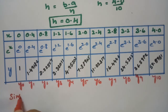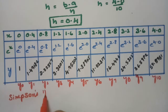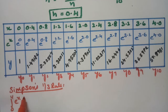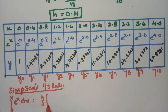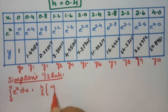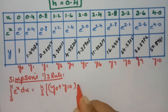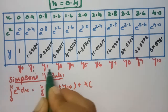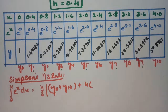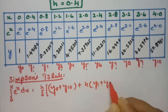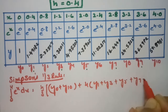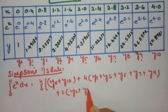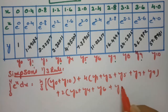According to Simpson's 1/3 rule, the formula for the integral from 0 to 4 of e^x dx is equal to h/3 times the first ordinate plus the last ordinate — that is y0 plus y10 — plus 4 times all the odd-indexed values: y1, y3, y5, y7, y9, plus 2 times the even-indexed values: y2, y4, y6, y8.